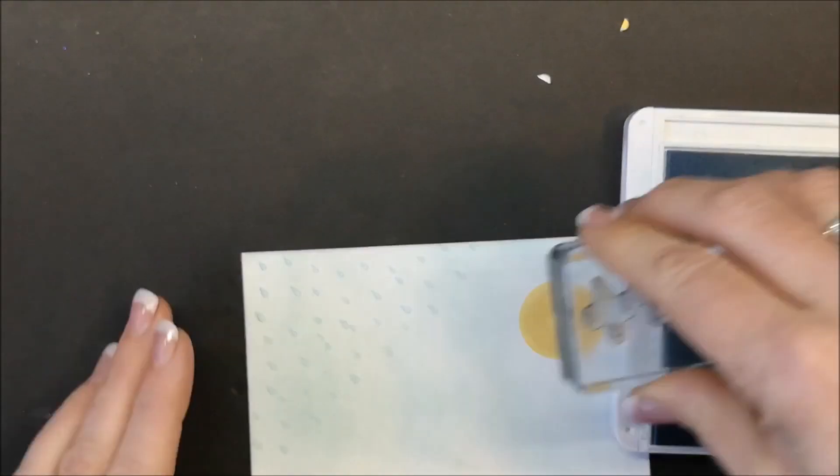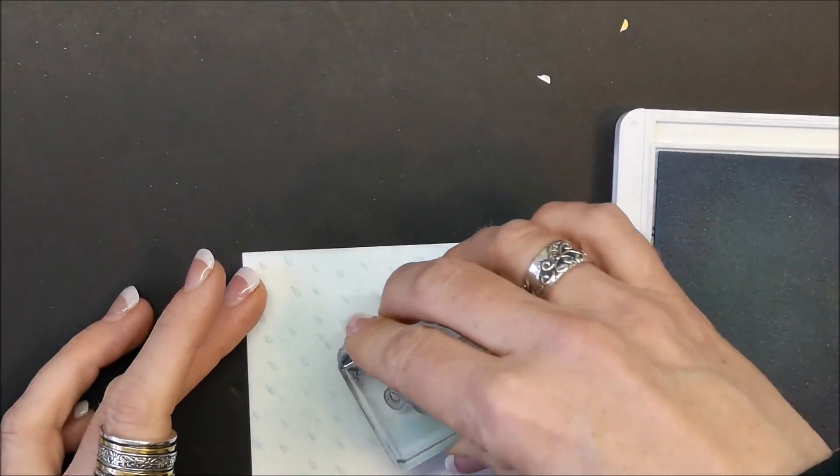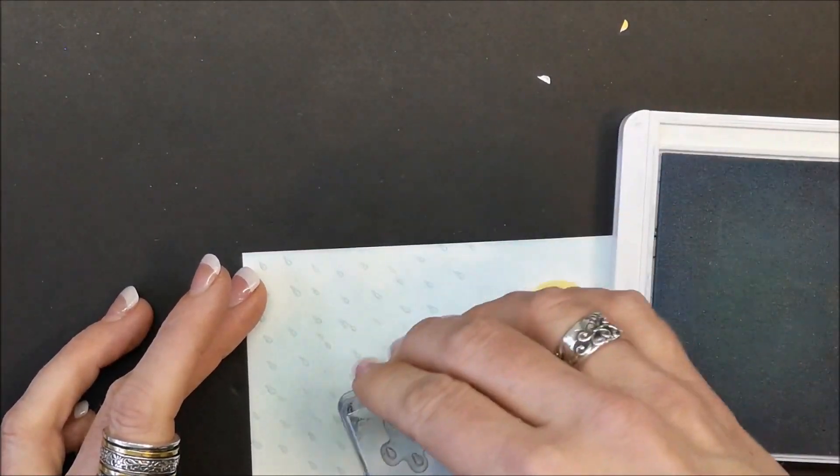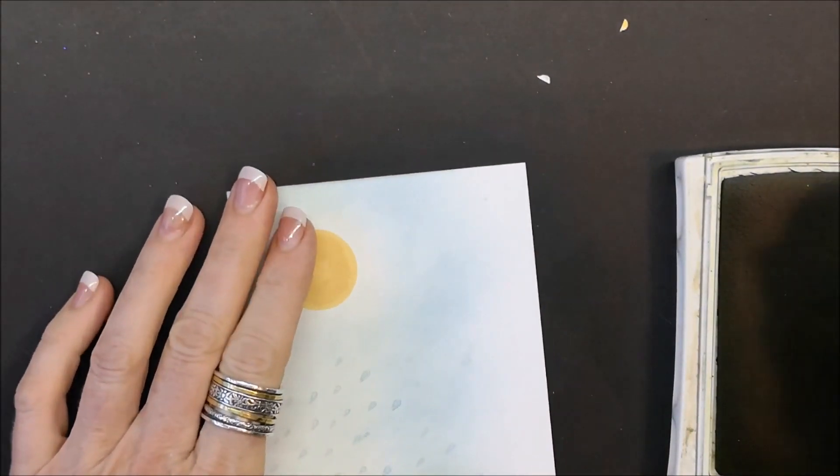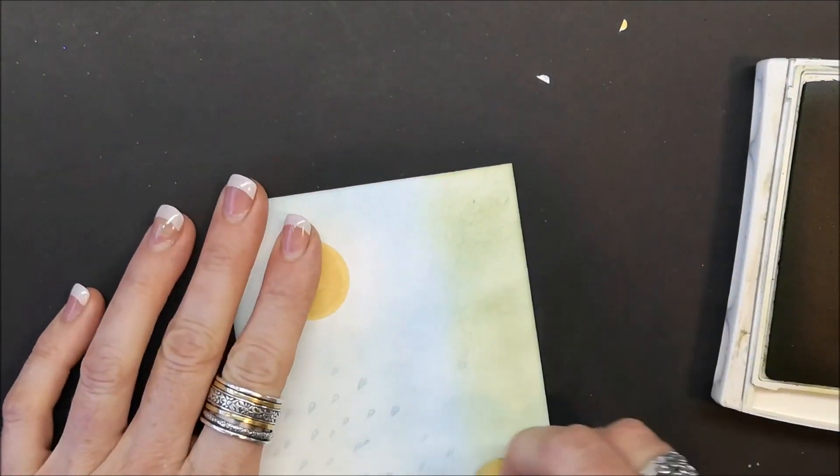This is a fun way of incorporating rain and Sun. Now I'm going to sponge along the bottom for the grass with Old Olive.